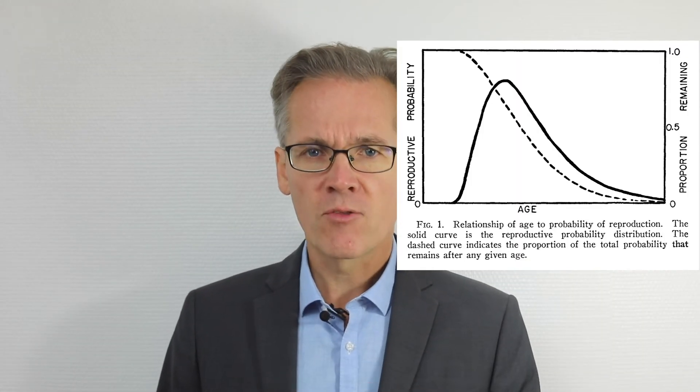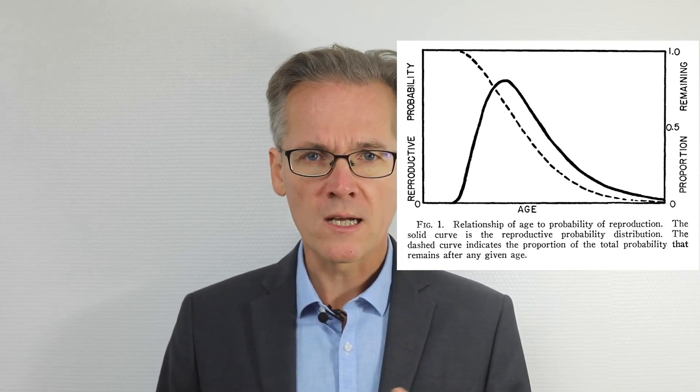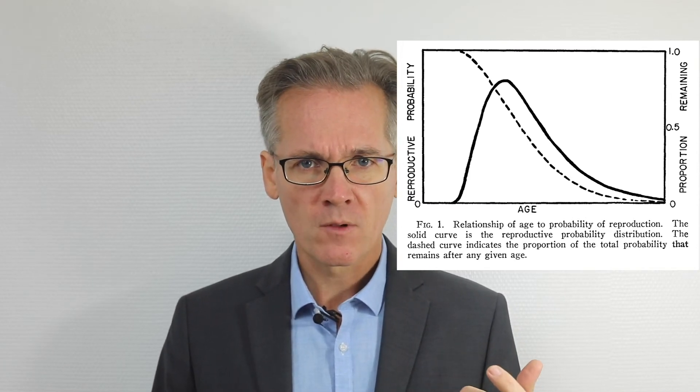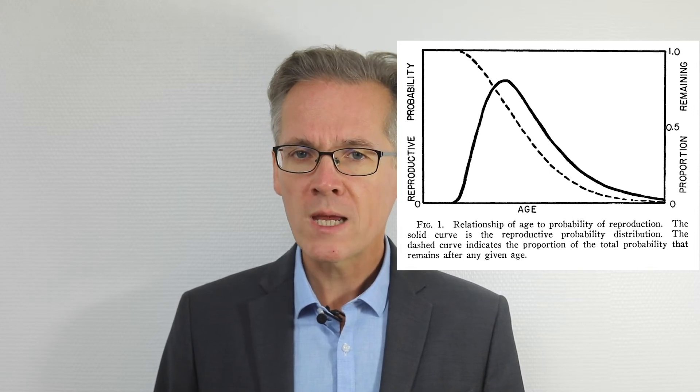According to the pleiotropic theory, four factors must be considered to understand senescence. 1. A soma, which is essential for reproductive success but is not transmitted. 2. The natural selection of alternative alleles in a population. 3. Pleiotropic genes that have opposite effects on fitness at different ages — i.e., in different somatic environments. 4. A decreasing probability of reproduction with adulthood. The figure here represents the fourth factor. The dashed line indicates the remaining proportion, while the solid line is the probability of reproducing at a given age. The question is to explain the link between the two curves, which Williams does through three hypotheses.